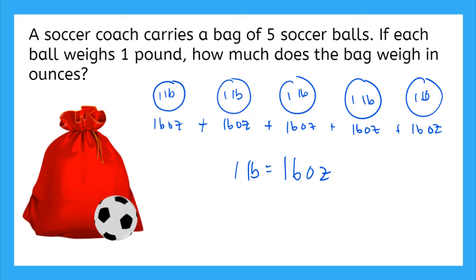Now if you know how to multiply with big double digit numbers, you'll know that adding 16 five times is the same as saying 16 ounces times five. And either way we get the answer of 80 ounces. So the five soccer balls together will equal 80 ounces.